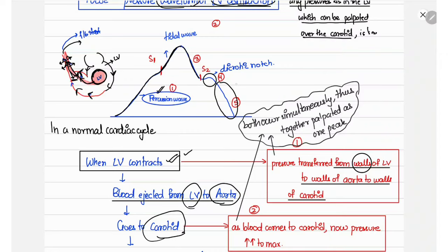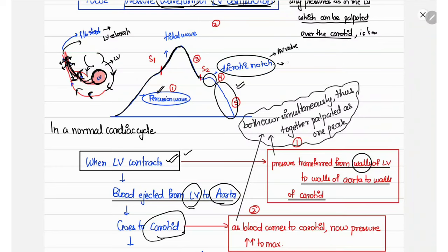Following the dicrotic notch, as left ventricular relaxation progresses, there is progressive decrease in pressure. In summary: the percussion wave occurs due to pressure transmission across vessel walls; the tidal wave occurs due to left ventricular blood going through the carotids; pressure then decreases as blood goes to the peripheries; the dicrotic notch occurs due to aortic valve closure and blood being squeezed back from the peripheries; then carotid and left ventricular pressures progressively fall.